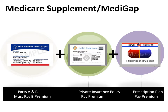You must purchase your Part D drug plan separately from a private insurance company. You do not have to buy it from the same company as your Medicare supplement plan. You pay a monthly premium for your Part D plan. If you do not purchase a standalone Part D plan when you elect to buy a Medicare supplement plan, you will be charged a 1% penalty of the standard premium for each month you went without coverage.